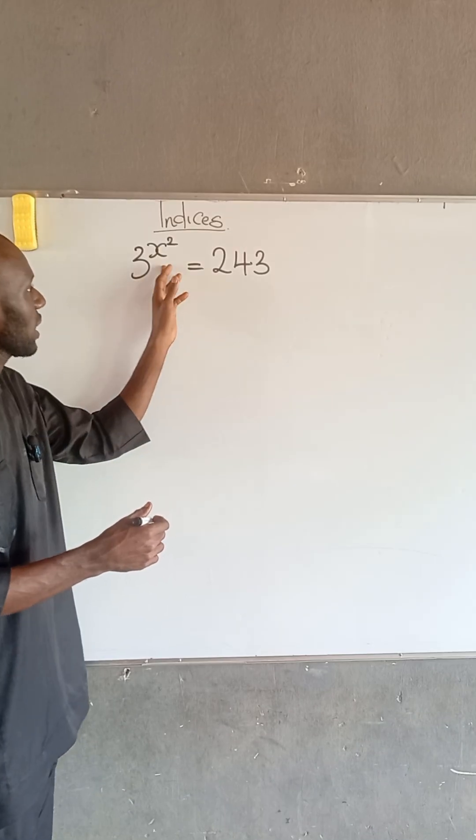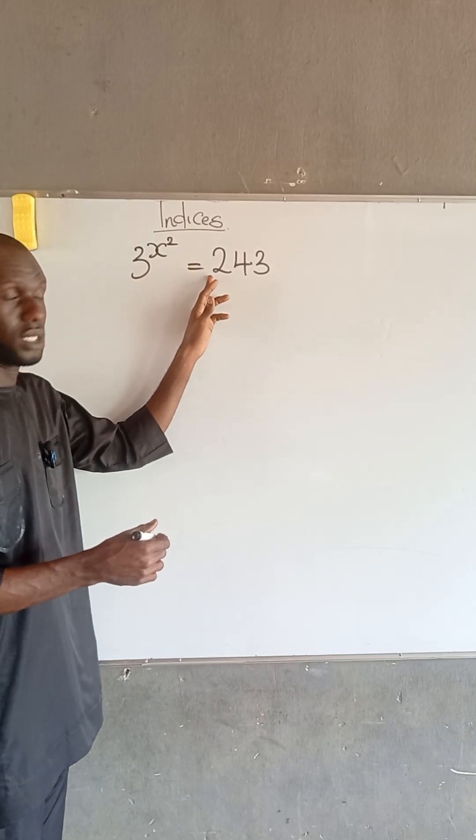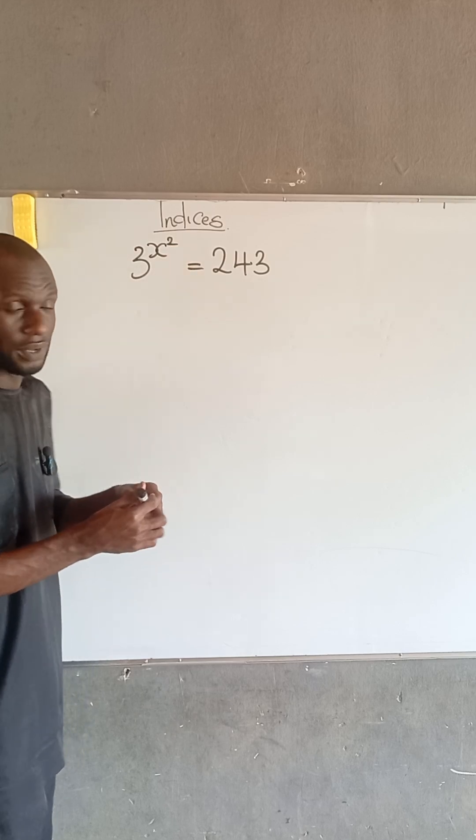We are given that 3 to the power of x squared is equal to 243. We are asked to find the value of x.